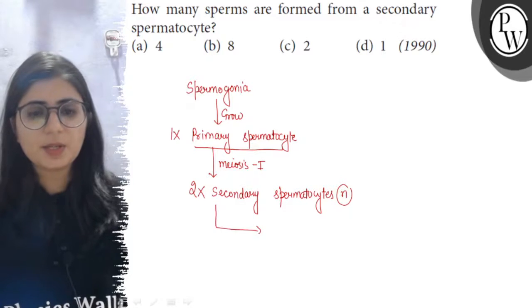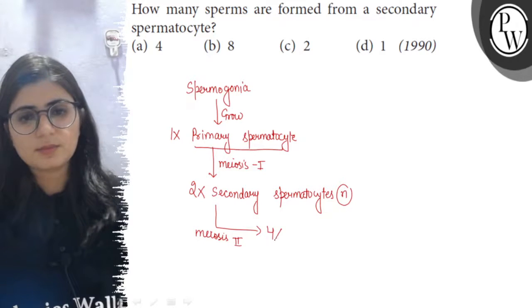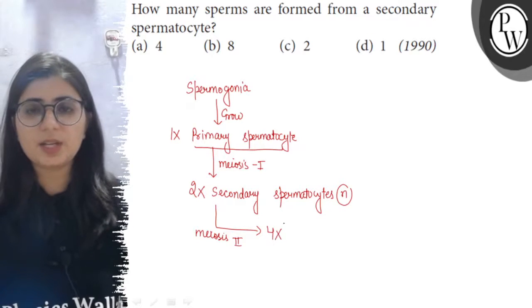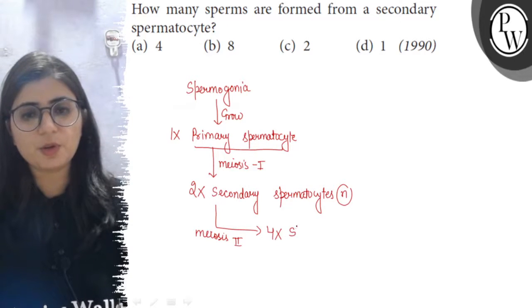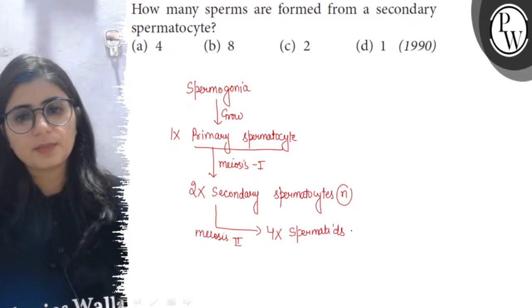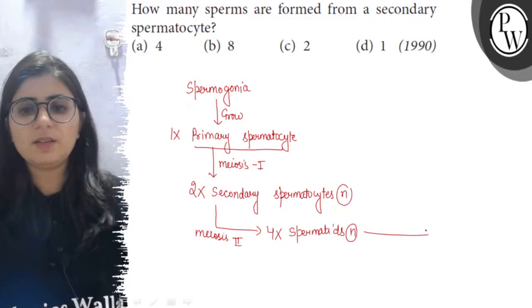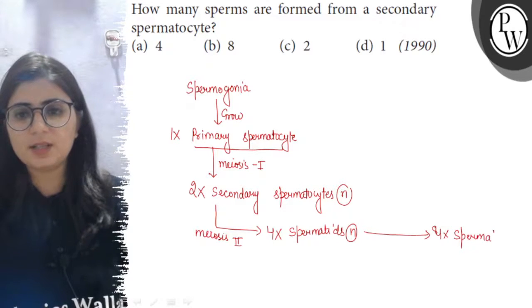Then the secondary spermatocyte undergoes meiosis 2 or the second division, and from each secondary spermatocyte there will be formation of two cells. From two there will be formation of four haploid cells which are called the spermatids. Now each spermatid will differentiate to form the sperm, so four spermatozoa from four spermatids will be produced.